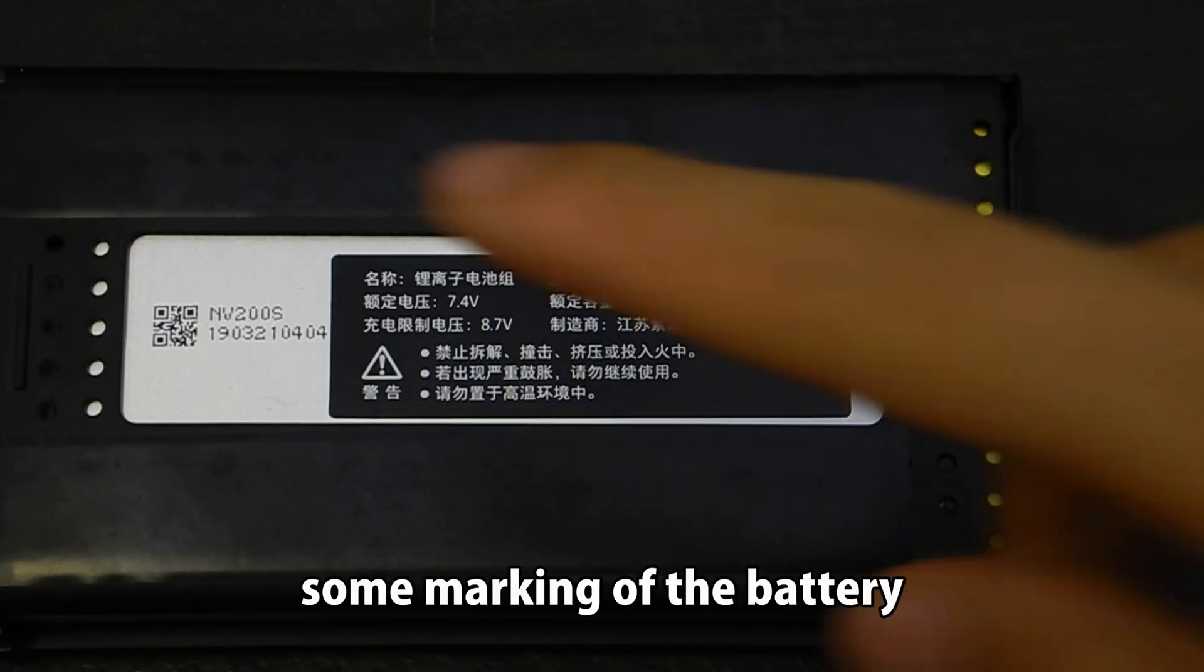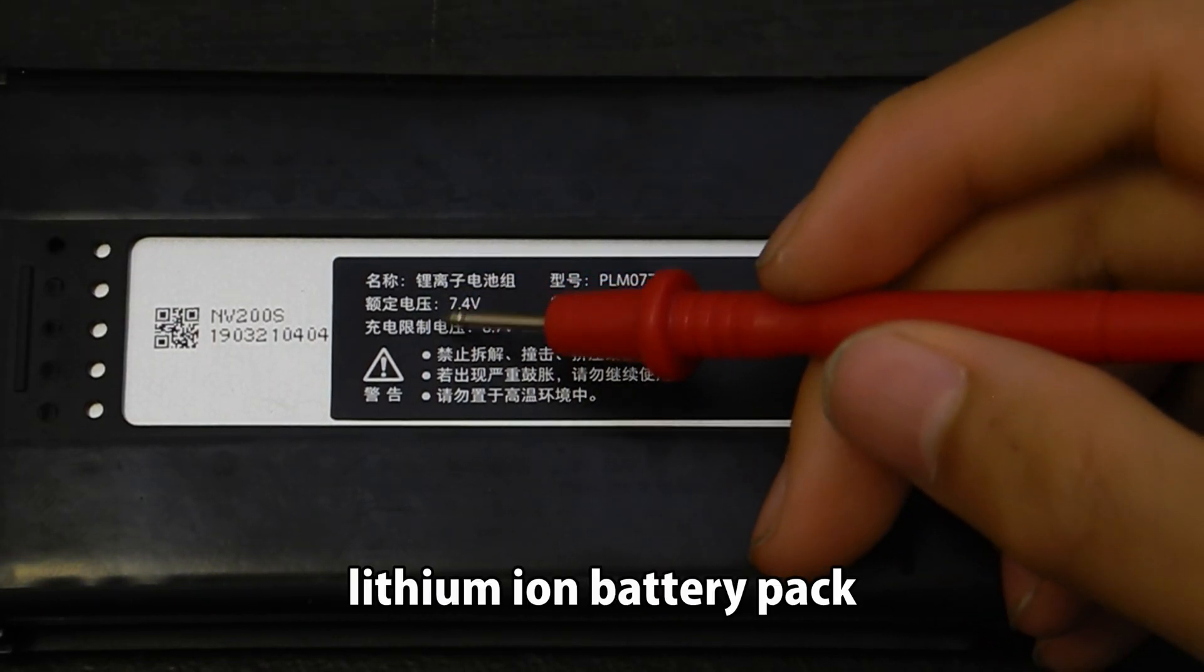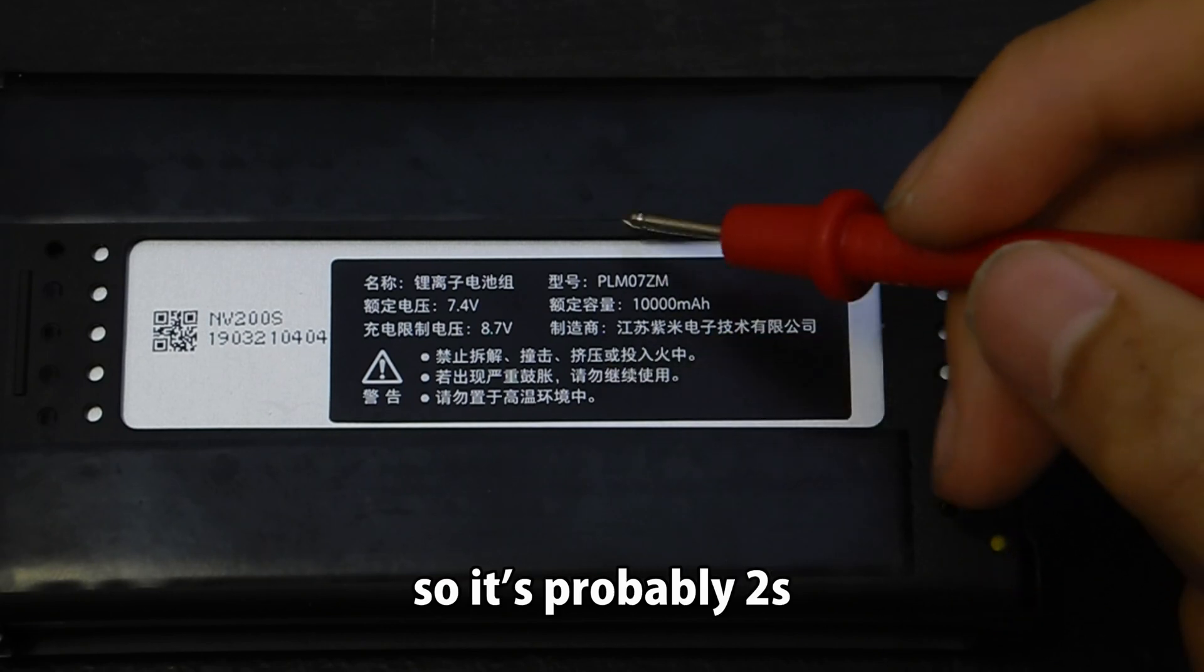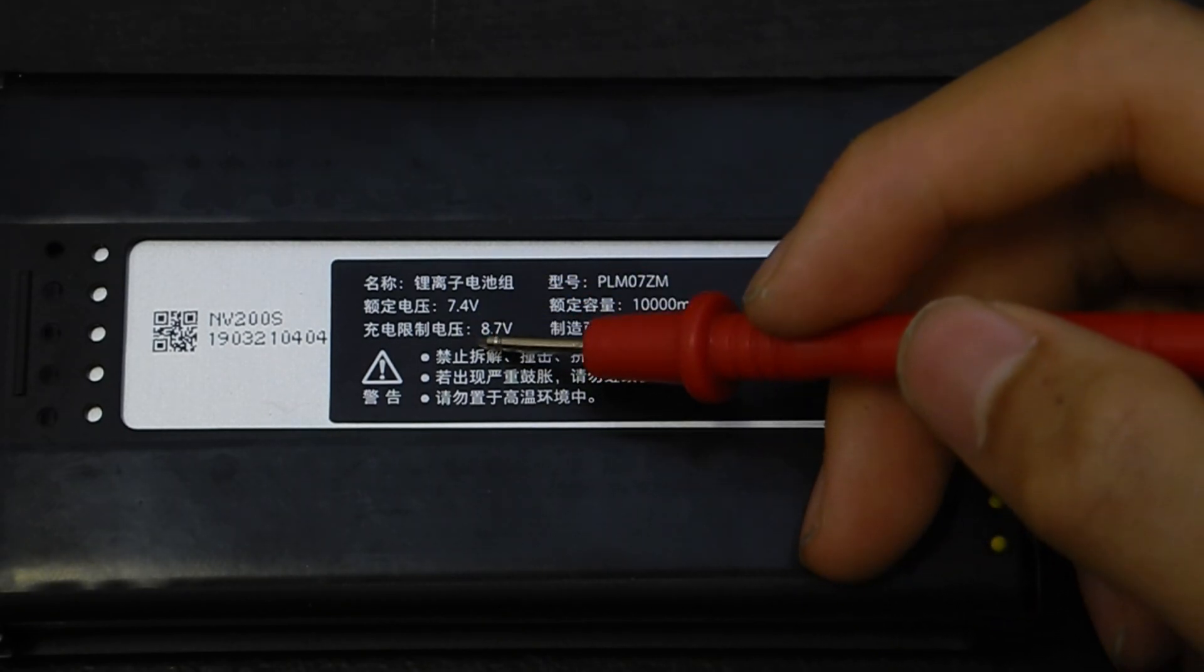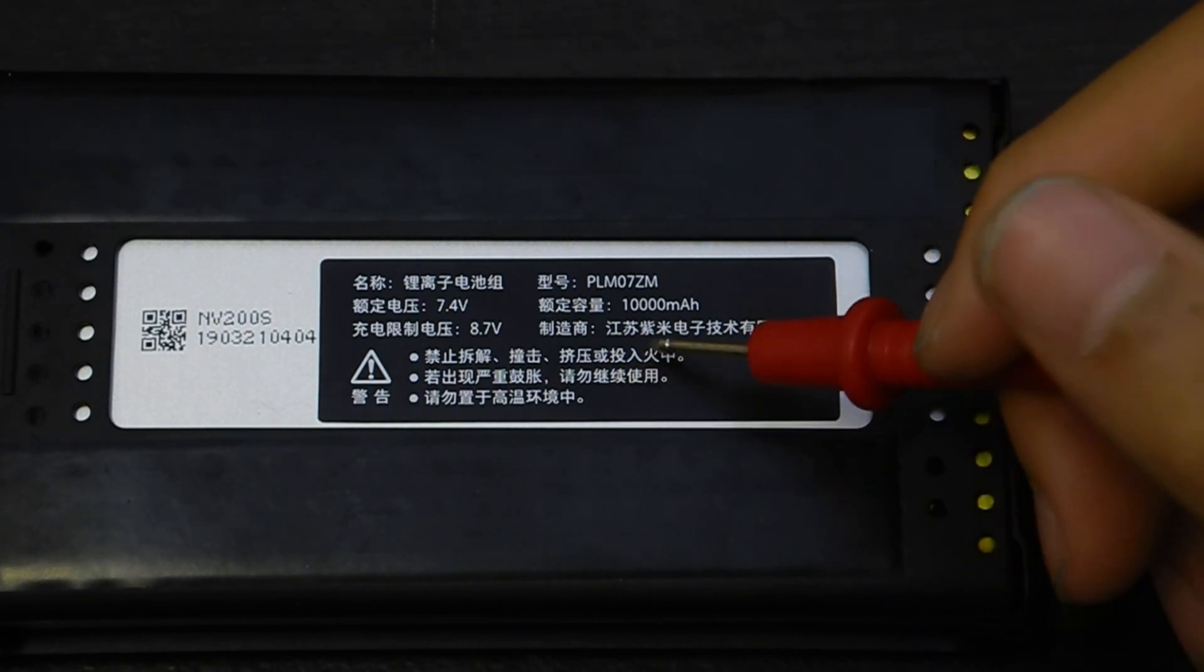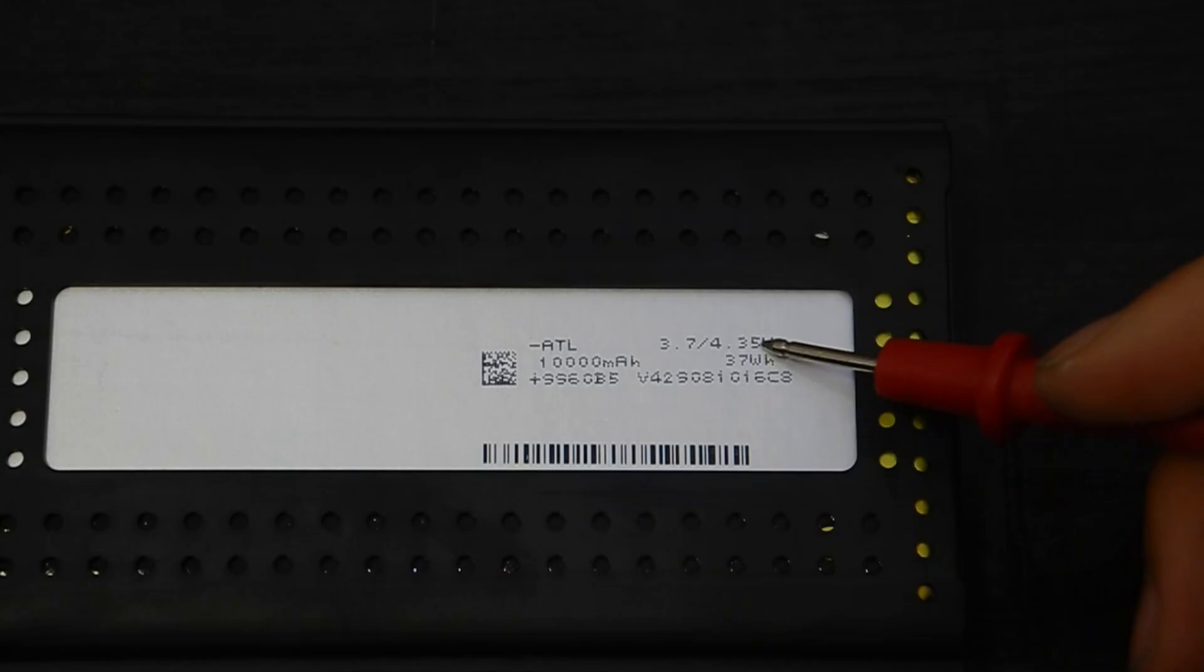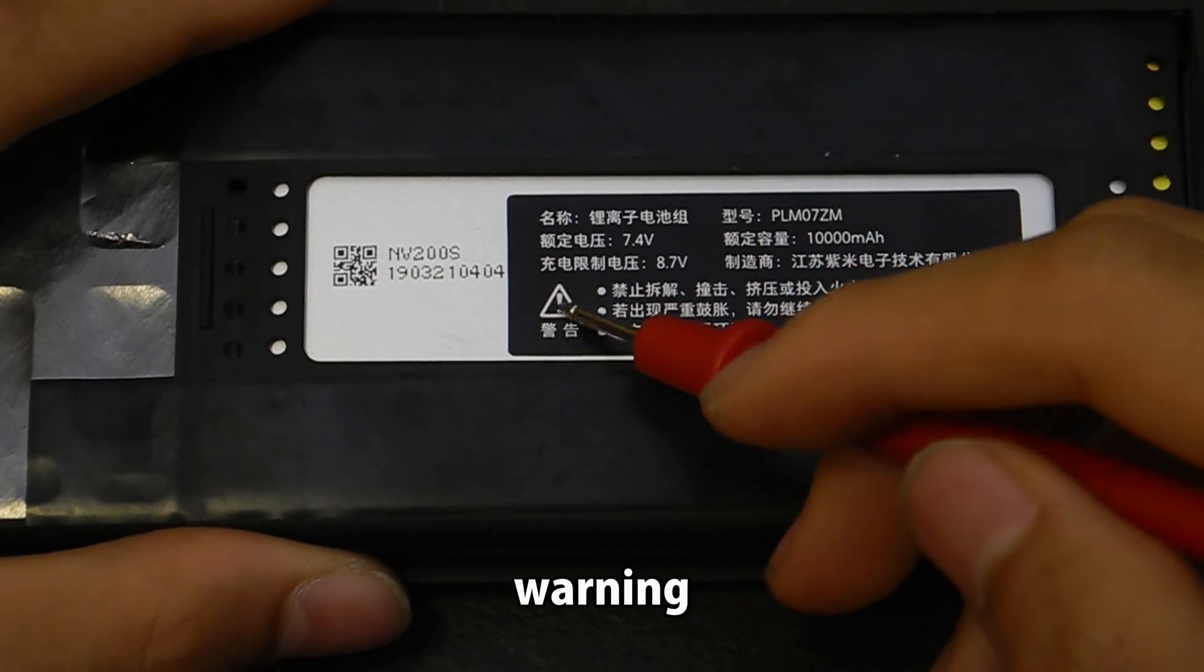Some marking of the battery. Lithium ion battery pack. 7.4V nominal. So it's probably 2S. Capacity is 10,000 mAh. The battery is 3.7V 10,000 mAh each. Warning.